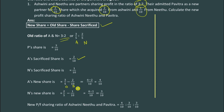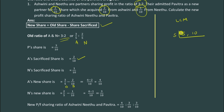To subtract 3/5 minus 2/10, we need LCM. To calculate LCM, take both denominators: 5 and 10. Divide by the least number - that is 5. Five ones are five, five twos are ten. Multiply 5 × 1 × 2 = 10. So the LCM is 10.